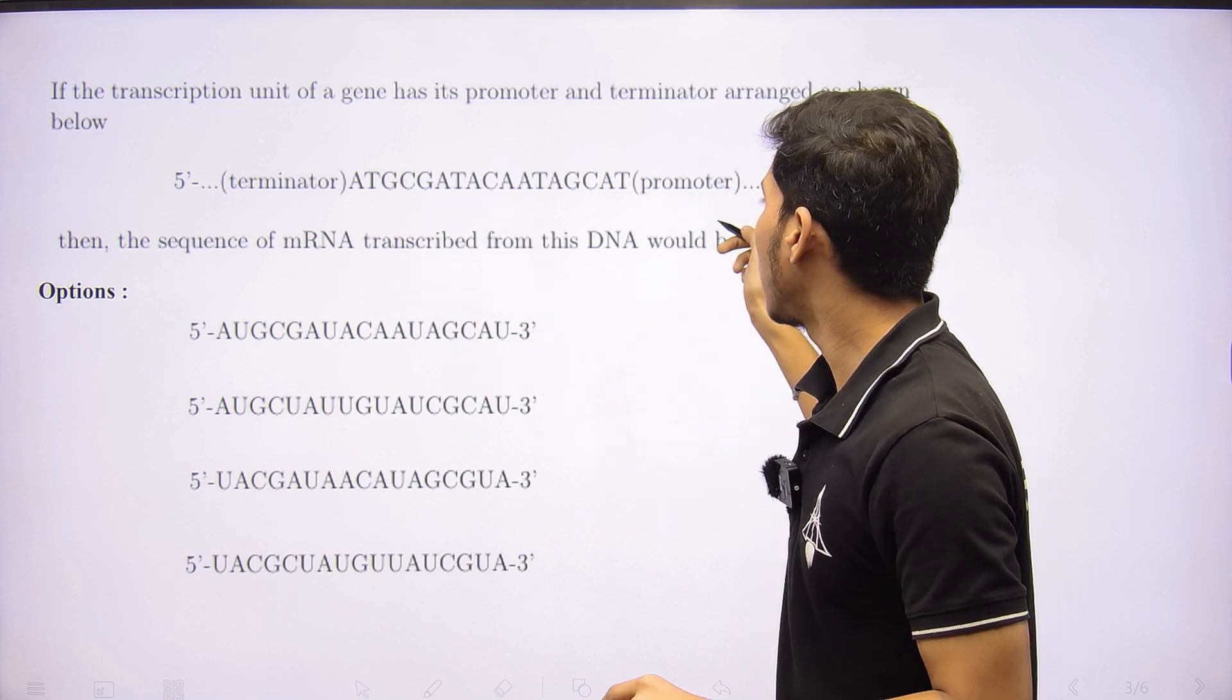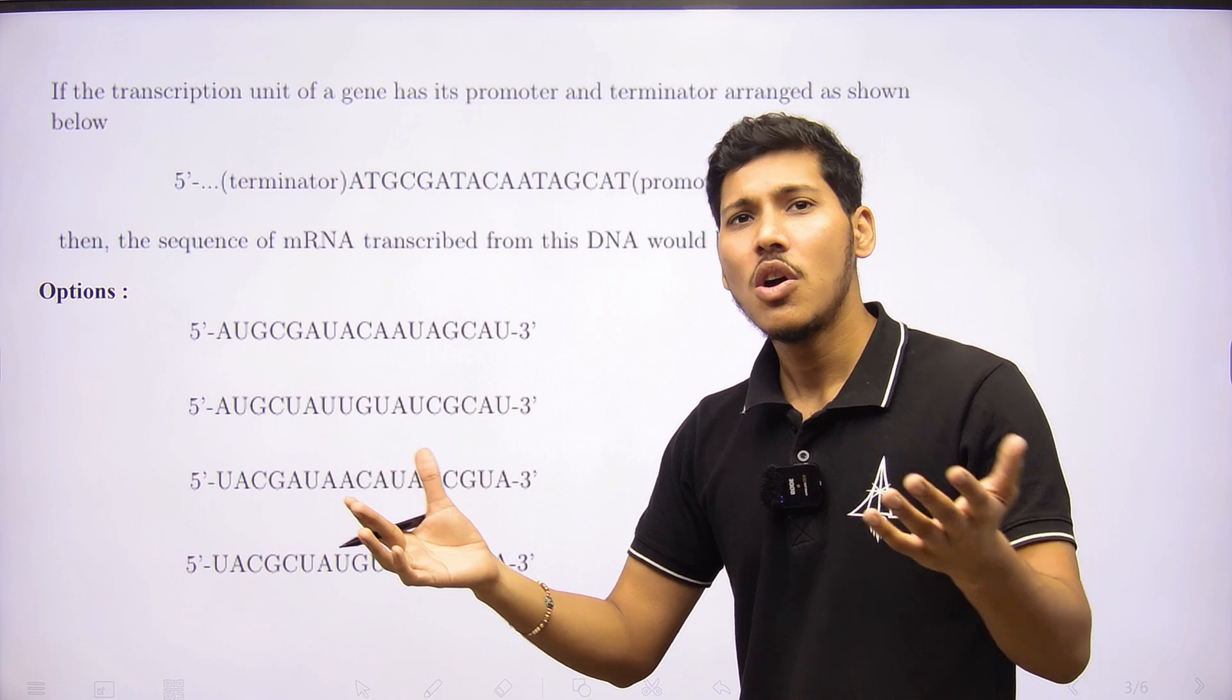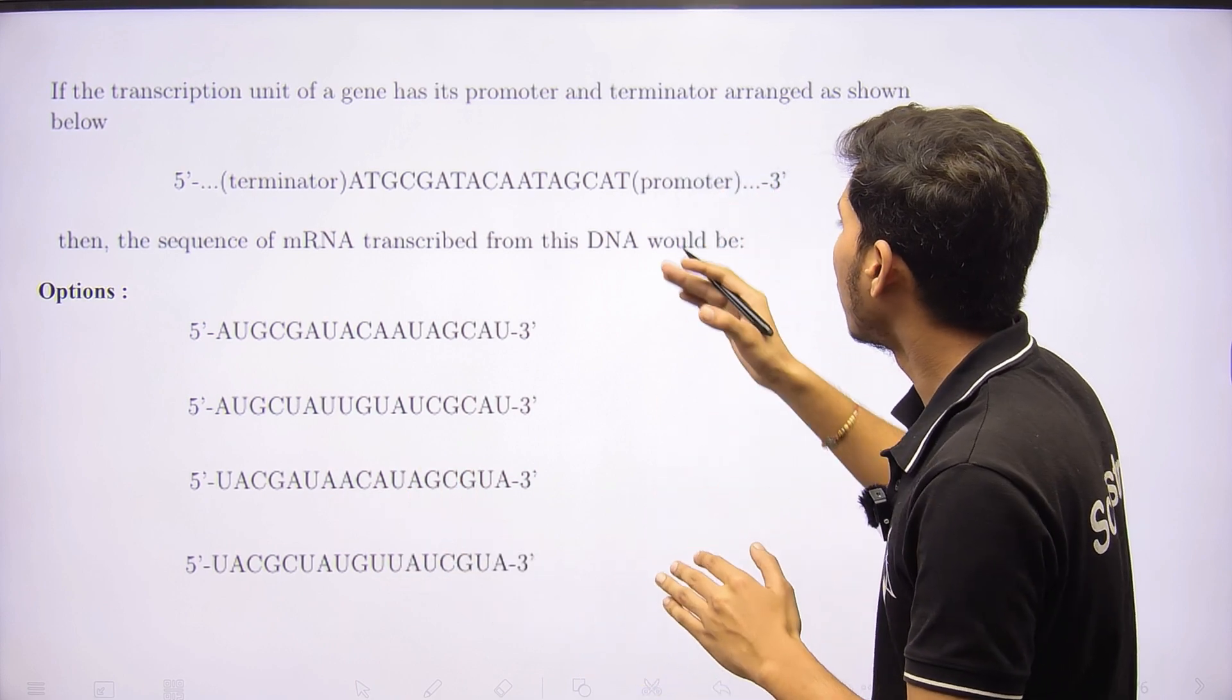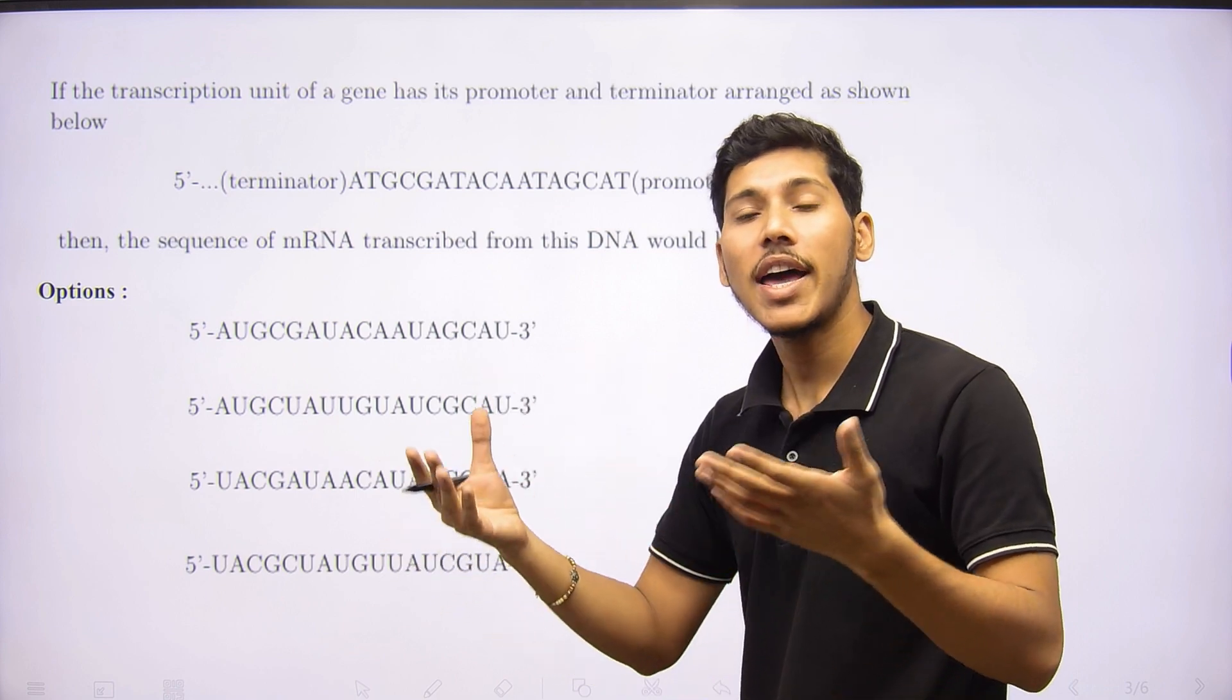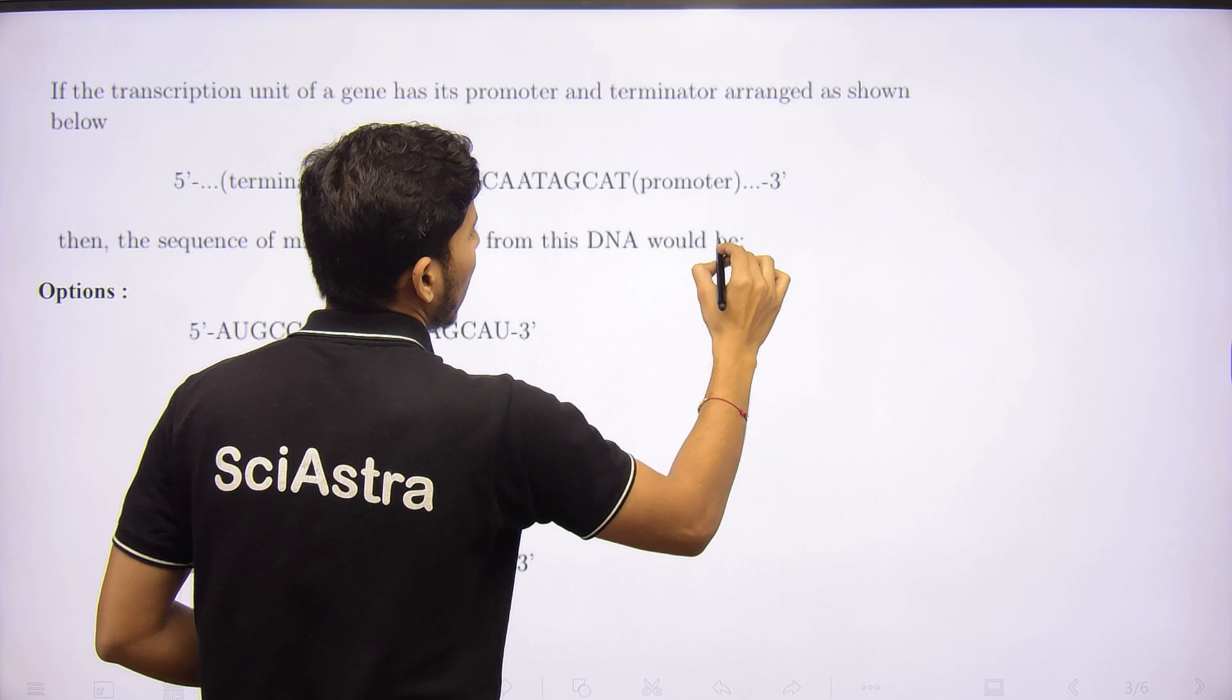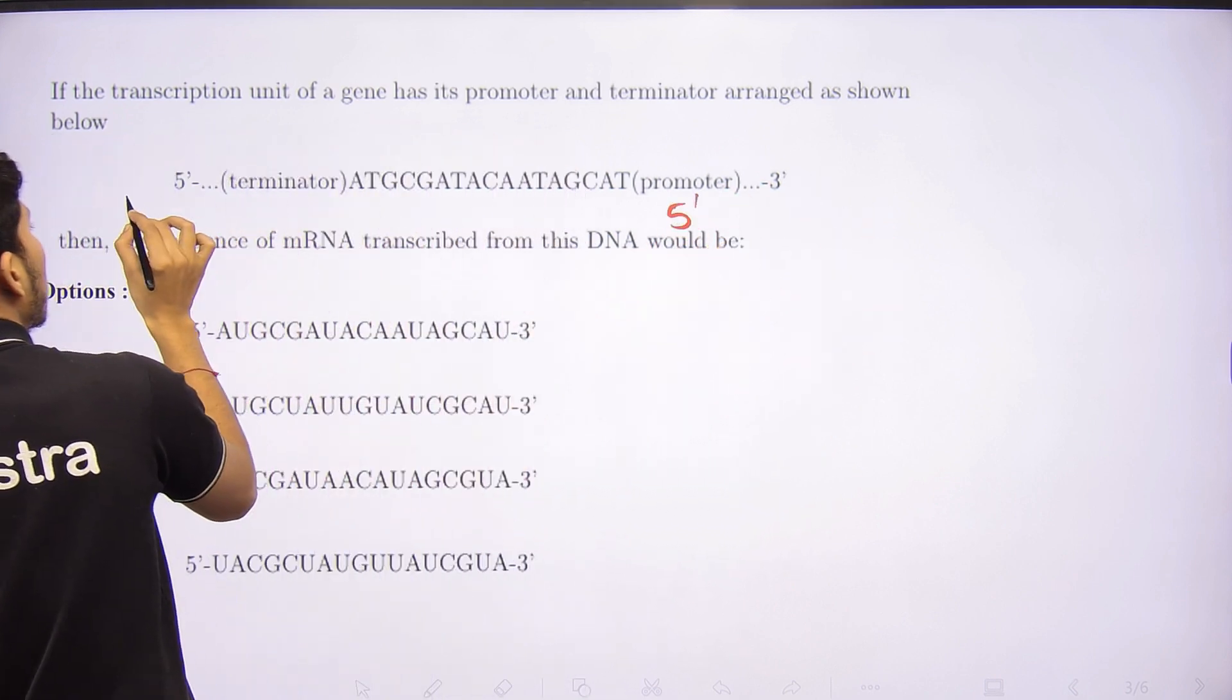Let's see. We just have to make the complementary sequence of this whole DNA strand. We know that A makes a hydrogen bond with U in RNA.